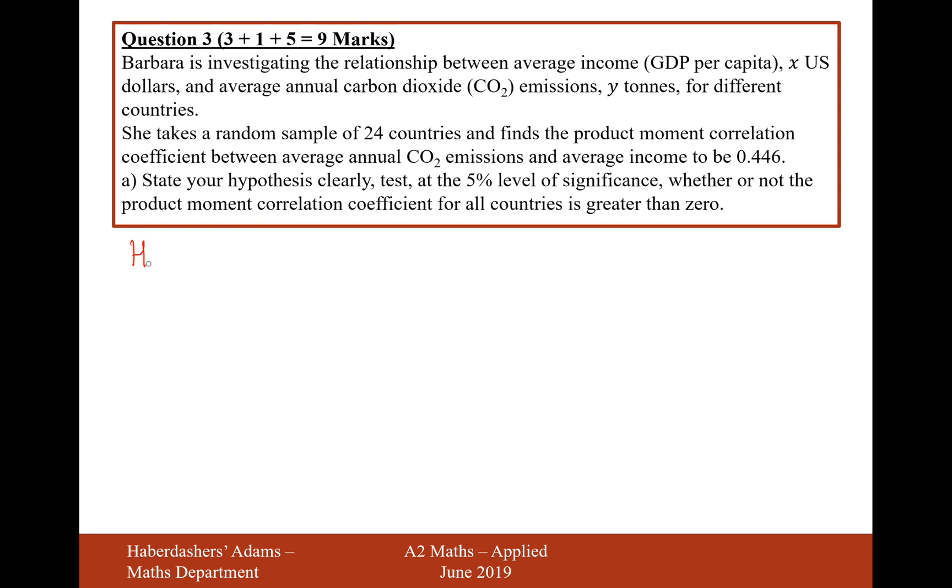Okay, so let's start off with our hypotheses. Our hypothesis is to start with that there is no correlation between the two variables, and our alternate hypothesis is that it is greater than zero. So rho is greater than zero. Now what we're going to be working out here is the value for R, and in fact it's told us the value of R is 0.446.